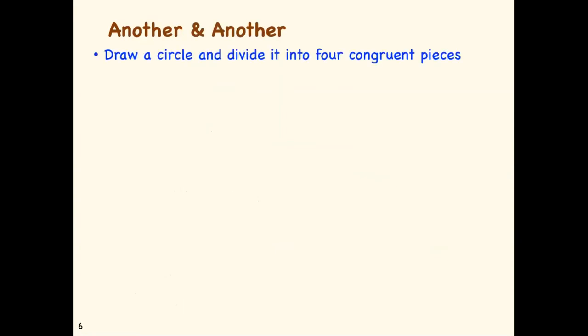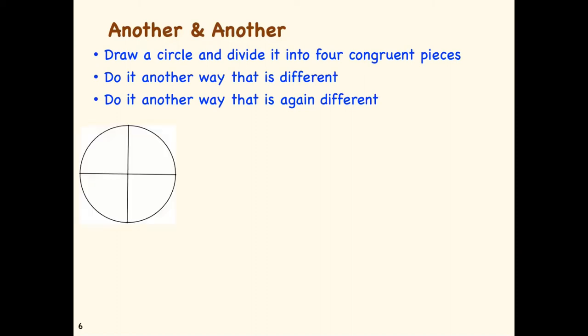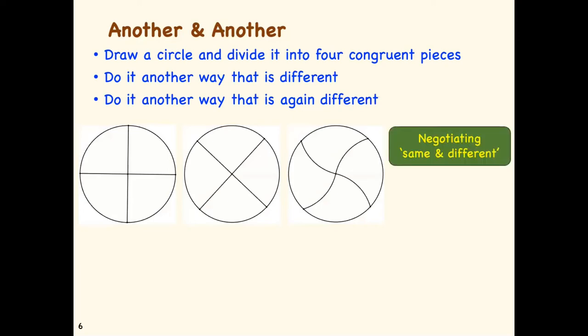Draw a circle now and divide it into four congruent pieces. Maybe pause while you do that. Now do it another way that's different. And another way that's again different. My guess is that most people I know draw something like that the first time. Then for the second one, many people draw that. But then there's the question, is that really different or is it not? Some people then do something like this. Is that really different? And so there's an opportunity in this task to negotiate what's the same and what's different.